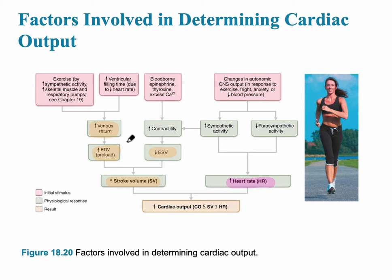Ways in which venous return is increased include exercise through sympathetic activity, skeletal muscle pumps, and respiratory pumps — which will be discussed more in Chapter 19. The skeletal muscle, especially in the calf, as it contracts, helps to pump the blood back towards the heart.